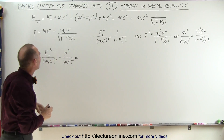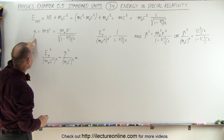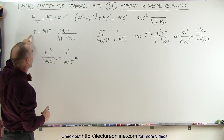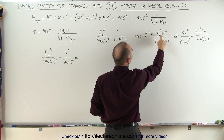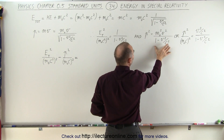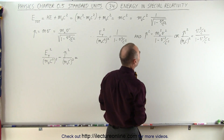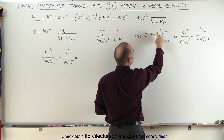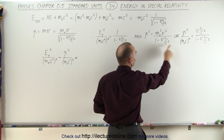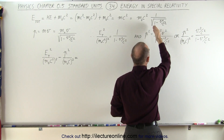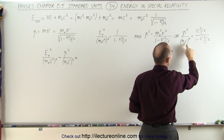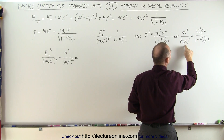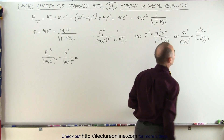Now we're doing the same with the momentum equation. We square both sides, so this becomes p squared equal to m-sub-naught squared v squared divided by 1 minus v squared over c squared. We move m-sub-naught squared to the denominator, and we also divide both sides by c squared, giving us 1 over c squared on each side.